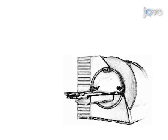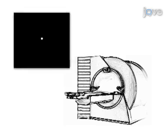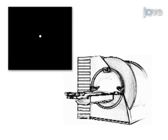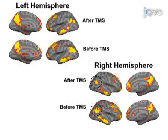The final step of the procedure is to again acquire several runs of functional imaging. Ultimately, results can be obtained that show TMS-induced changes in default network activation through blood oxygenated level dependent imaging analysis.